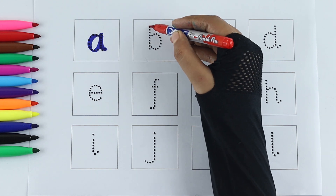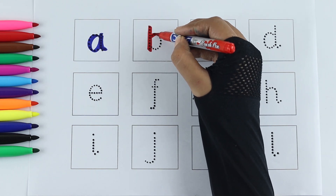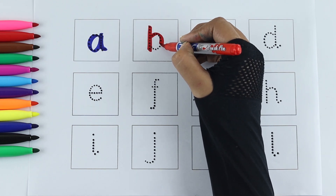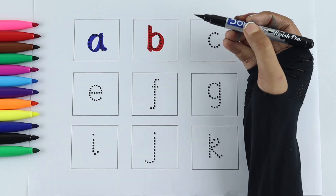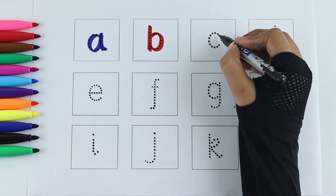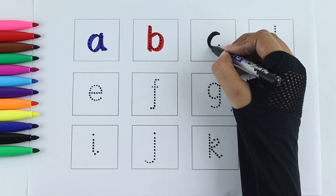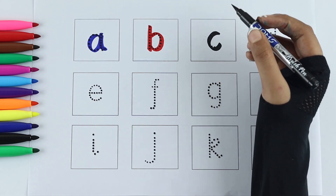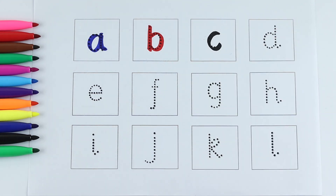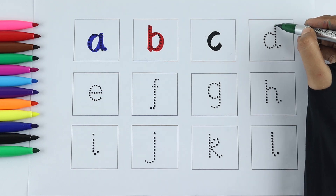B for banana. Black color. C, C for cat, C for cow. Green color. D.